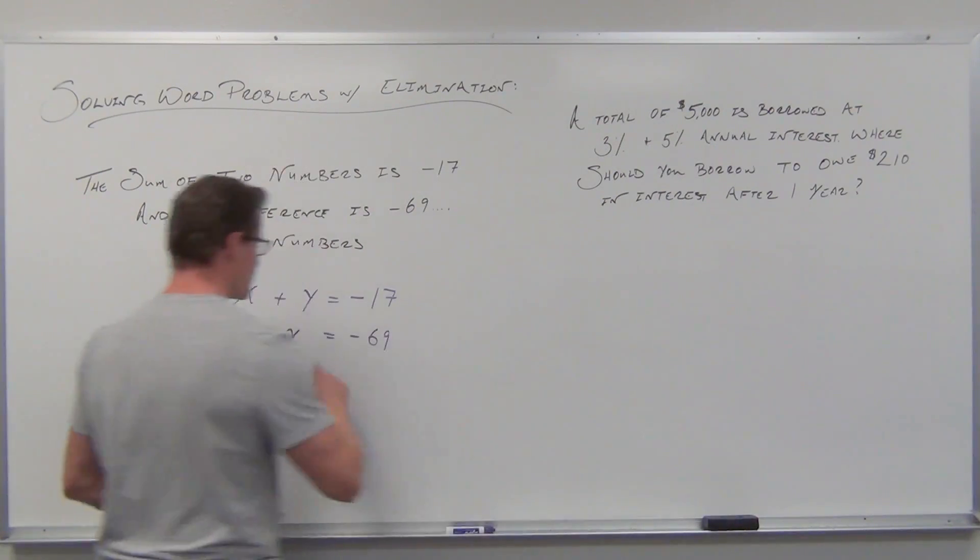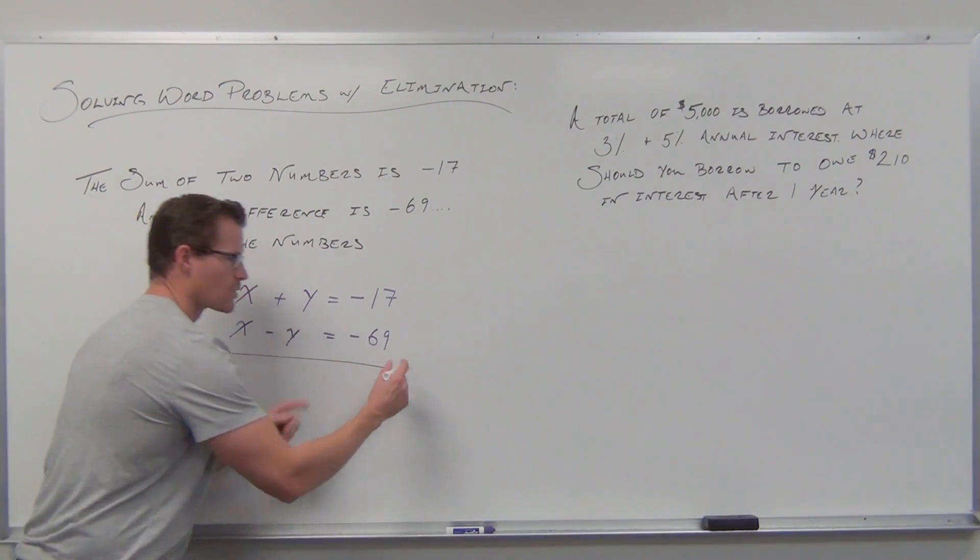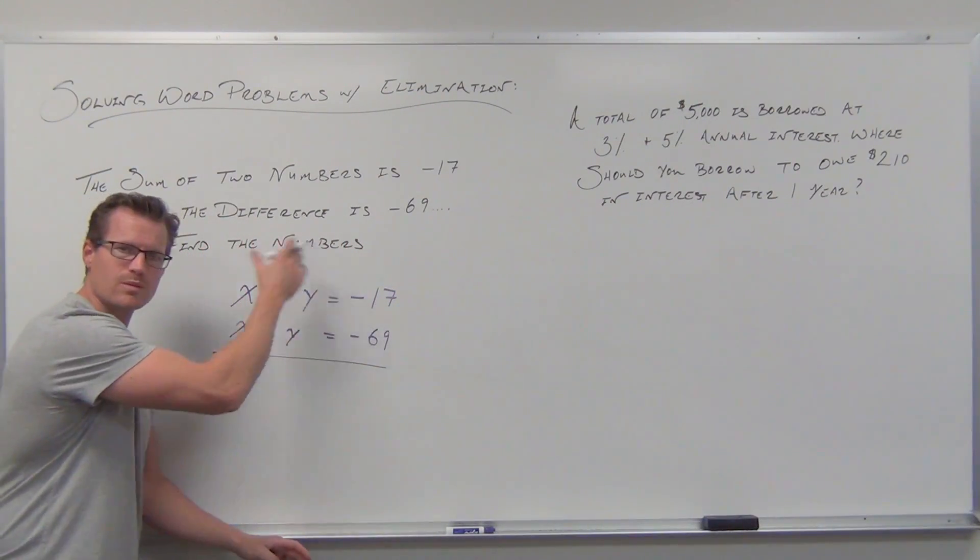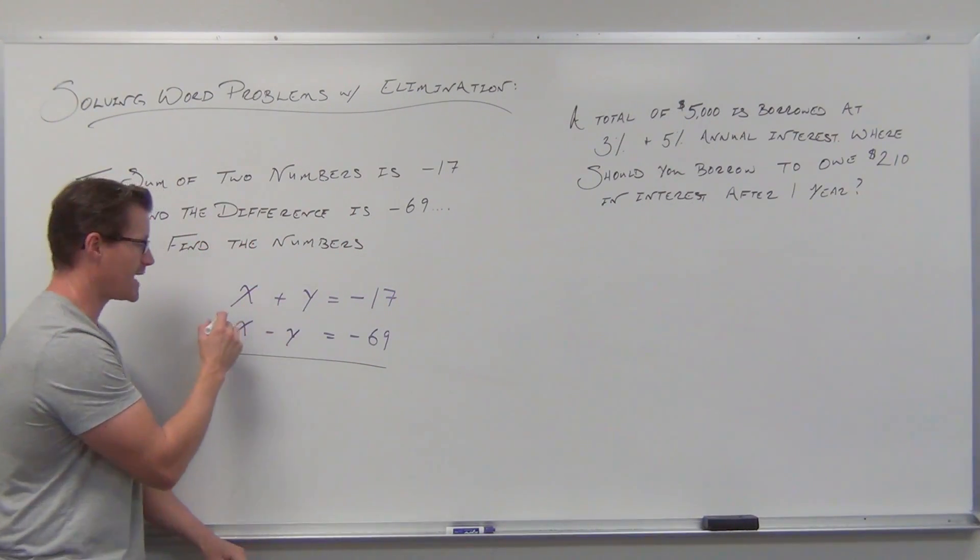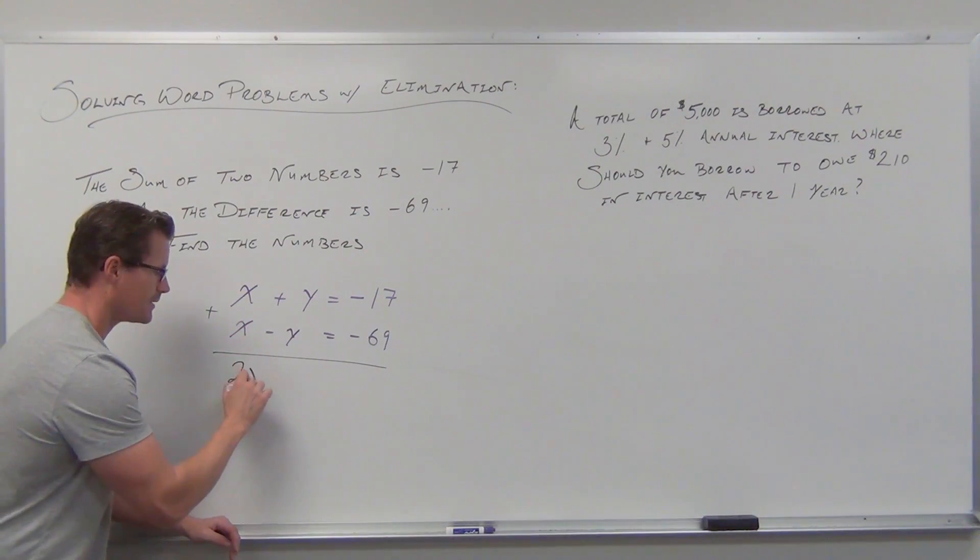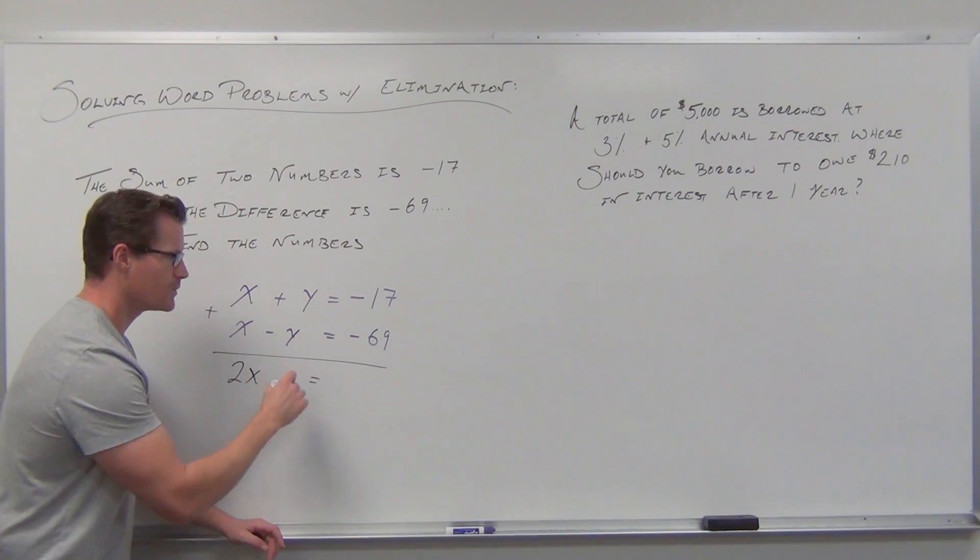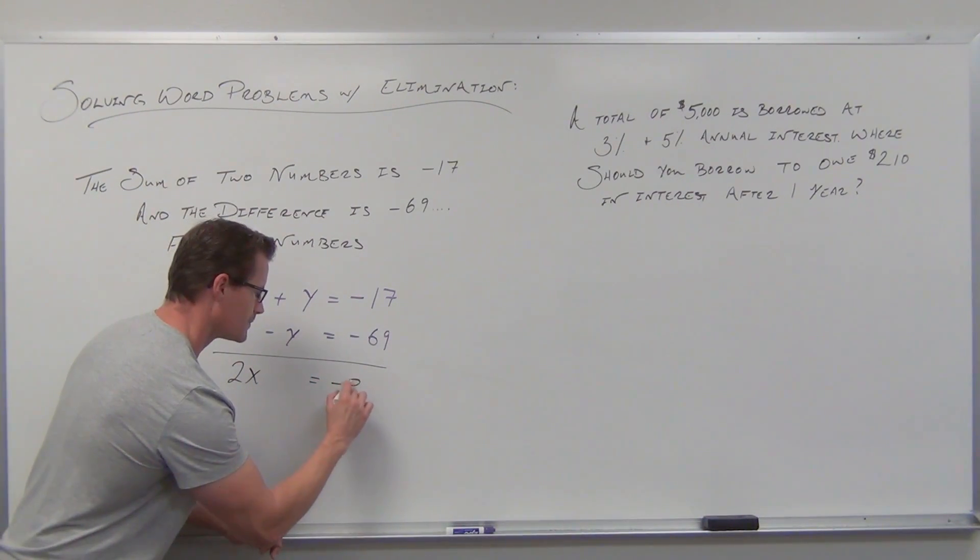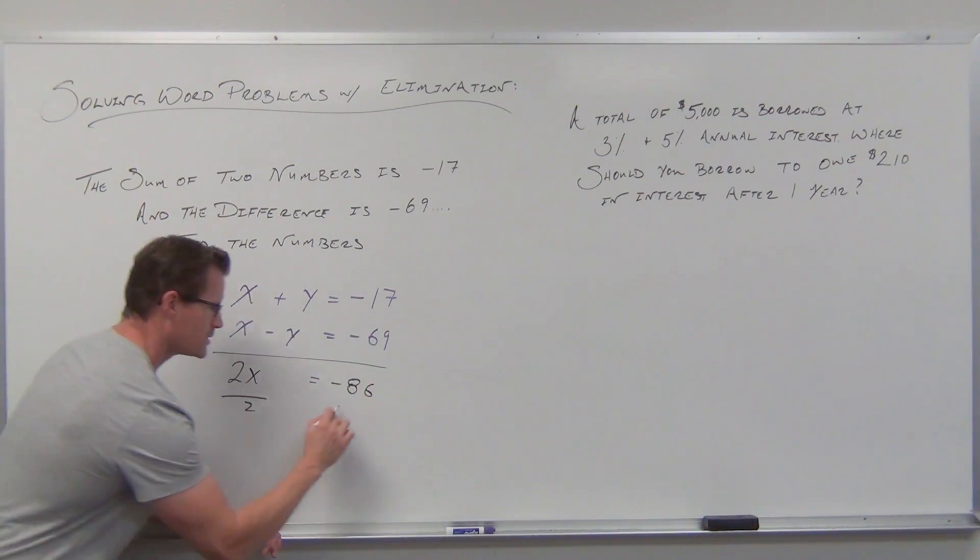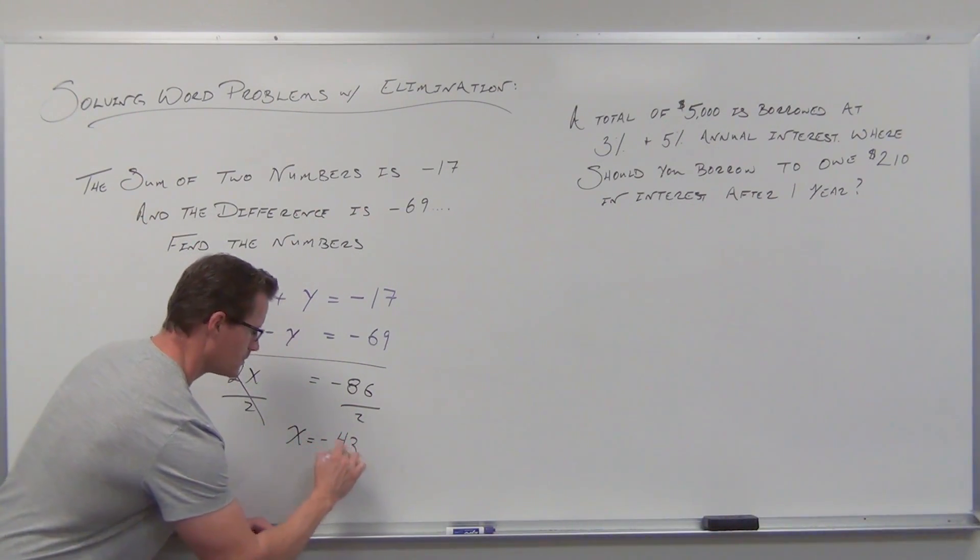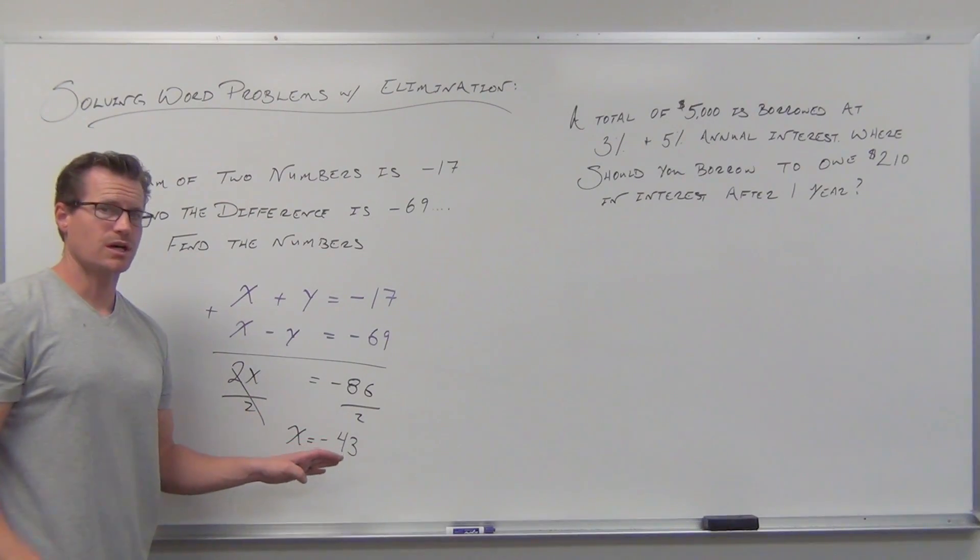This is set up for elimination method because my variables are on one side, lined up. I have one pair of variables with opposite terms. If I add, the variables eliminate. On the right side we get -86. Dividing by 2 gives x = -43.